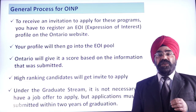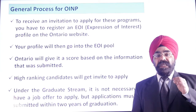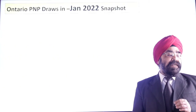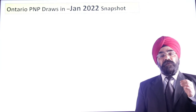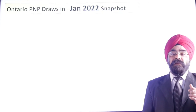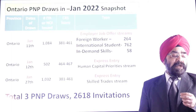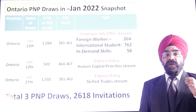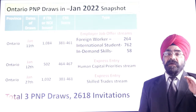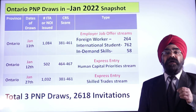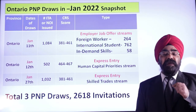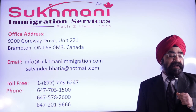If you need further information about any PNP topics, please reach out to our office in Brampton. Also worth noting: in January, Ontario conducted a draw inviting 2,618 candidates, showing that Ontario is inviting people for provincial nomination every month. Our email ID and phone numbers are available on screen. If you have not subscribed to the channel, please consider subscribing. Thank you very much for watching.